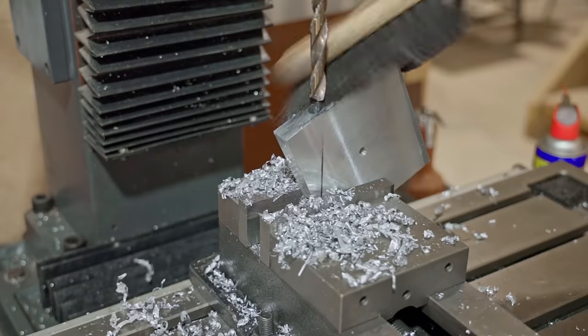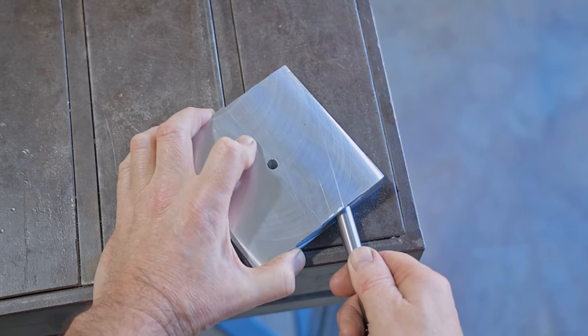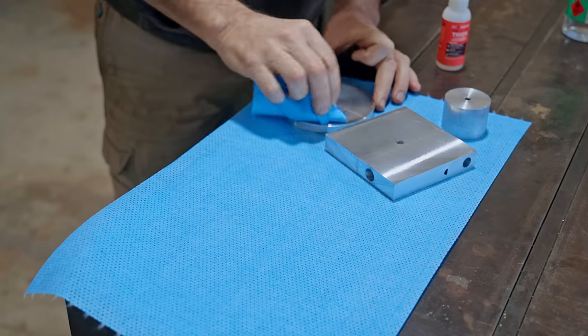By the way, the hole is half inch, and that's for a half inch 4140 steel rod. Next I'll mount it to the face plate ready to machine it into a ring.